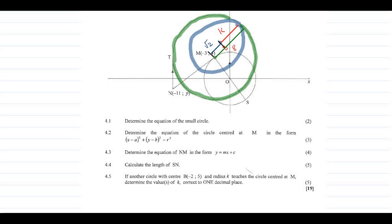Now we can see that the radius of the green circle is 8 and the distance BM is √2. For the blue circle to touch the green circle internally: 8 = √2 + k, therefore k = 8 − √2. Rounding to one decimal place, k ≈ 6.6. Don't forget to like and comment on the video — let me know if it was helpful.